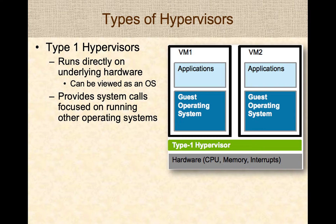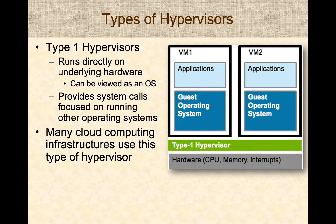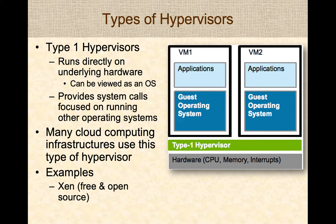Type 1 Hypervisors are predominantly focused on the creation and running of virtual machines. You would typically not run web browsers or desktop applications on top of a Type 1 Hypervisor; instead, those applications run inside a guest operating system running on top of it. Many cloud computing infrastructures use Type 1 Hypervisors. Common examples include Xen, a free and open-source Type 1 Hypervisor, and VMware, which is also a Type 1 Hypervisor.